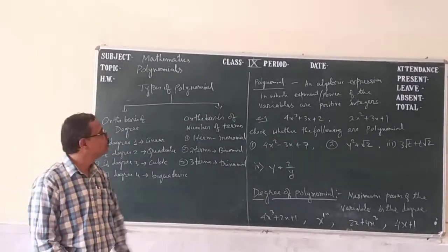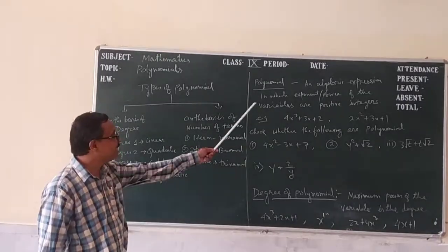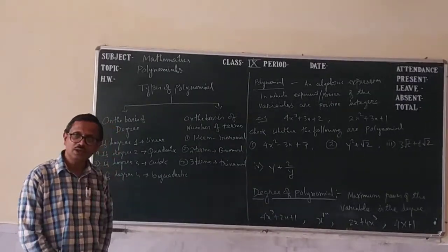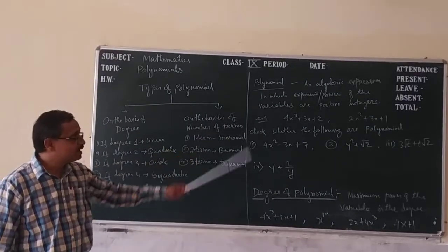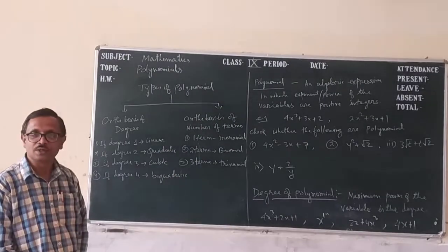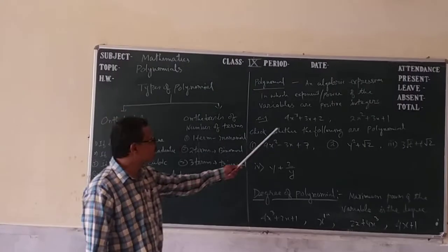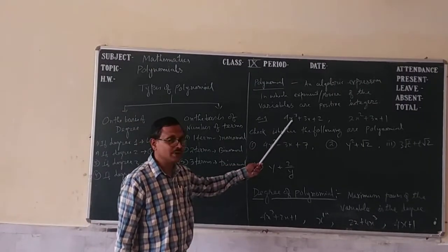First of all, we know what is a polynomial. A polynomial is an algebraic expression in which the power or exponent of the variables are positive integers. So what are the variables? Unknown quantities — these are called variables.